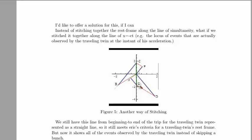We still have this line from the beginning to the end of the trip for the traveling twin represented as a straight line, so it still meets all of Eric's criteria for traveling twin's rest frame. But now it shows all of the events observed by the traveling twin instead of skipping a bunch.